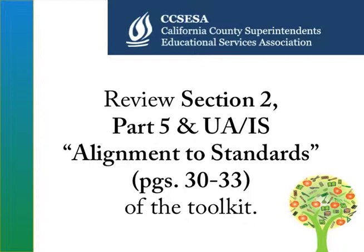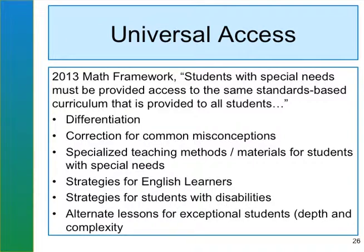Take time now to review part five and universal access. Looking at universal access, here is a statement from the 2013 math frameworks: students with special needs must be provided access to the same standards-based curriculum provided to all students. As you look through the materials, is there differentiation for all students — not just special ed students, but ELD students, basic learners, advanced learners, and proficient learners? Are there corrections for common misconceptions? What strategies exist for English learners and students with disabilities? Are there alternate lessons for exceptional students with increased depth, rigor, focus, and coherence?